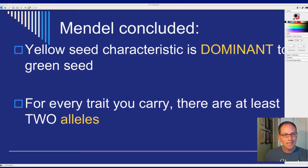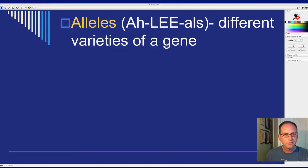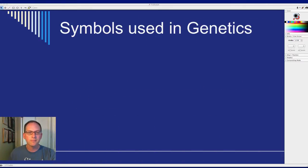He also said that for every trait you carry, there are at least two alleles. Some traits have even more — for example, eye color is a multiple allele trait where you may carry many alleles. An allele is a different variety of a gene, so yellow and green are two different alleles. For eye color, you may have over 12 different alleles.